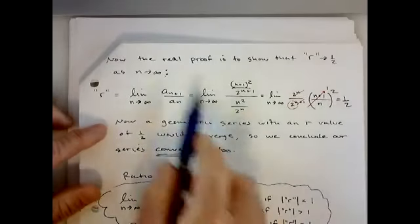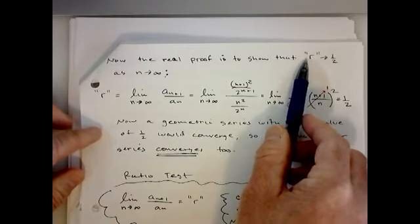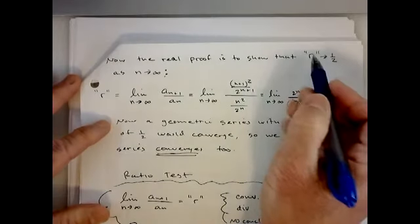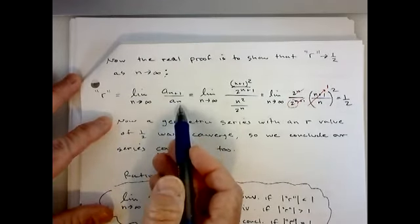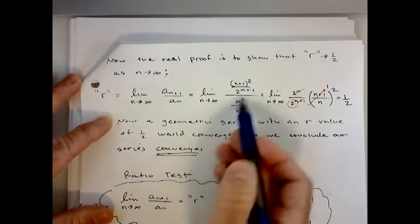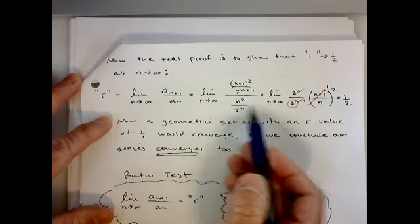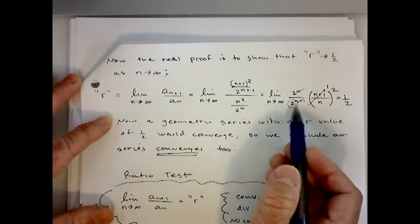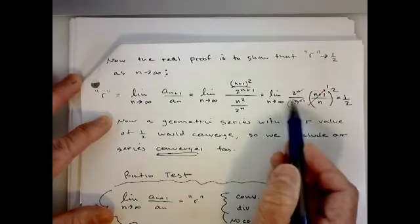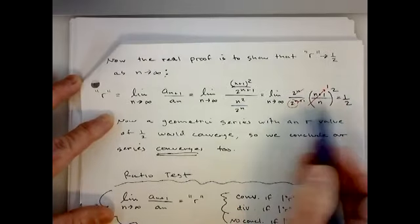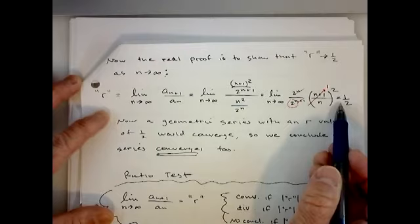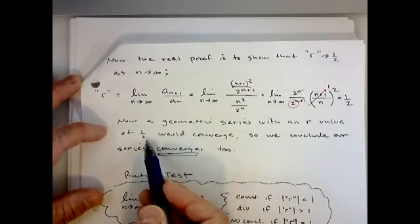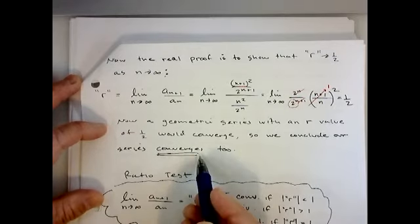Taking that limit, we want to show R equals one half — I'll put quote-unquote R because this isn't really a geometric series. I do the ratio a_(n+1) over a_n. A_n is your formula; a_(n+1) is just replacing all n's with n+1. Flip and multiply — the simplification is identical: 2 to the n and 2 to the (n+1) leaves a two in the bottom, and as n goes to infinity, (n+1)/n approaches one, so one squared is still one. My quote-unquote R value approaches one half, and our conclusion is that the series converges.